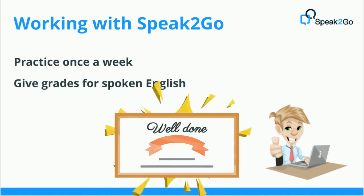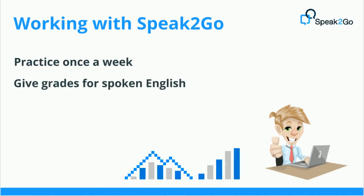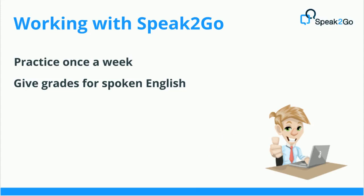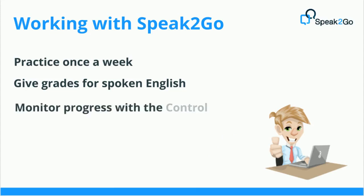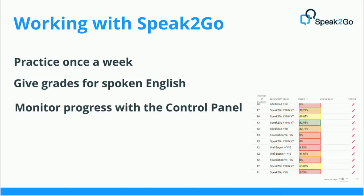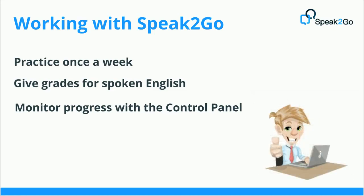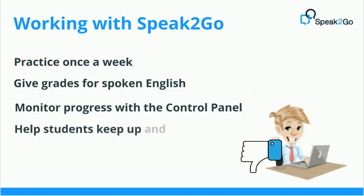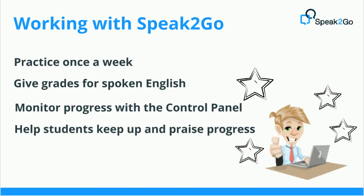Including Speak to Go in grading motivates students to practice and contributes greatly to improving their level of English. The control panel allows the teacher to track progress and understand at a glance the status of each student. Use it to monitor weekly activity — it's quick and easy, and keeps you up to date. You can identify students who are not practicing and falling behind, and also encourage those who are progressing nicely.